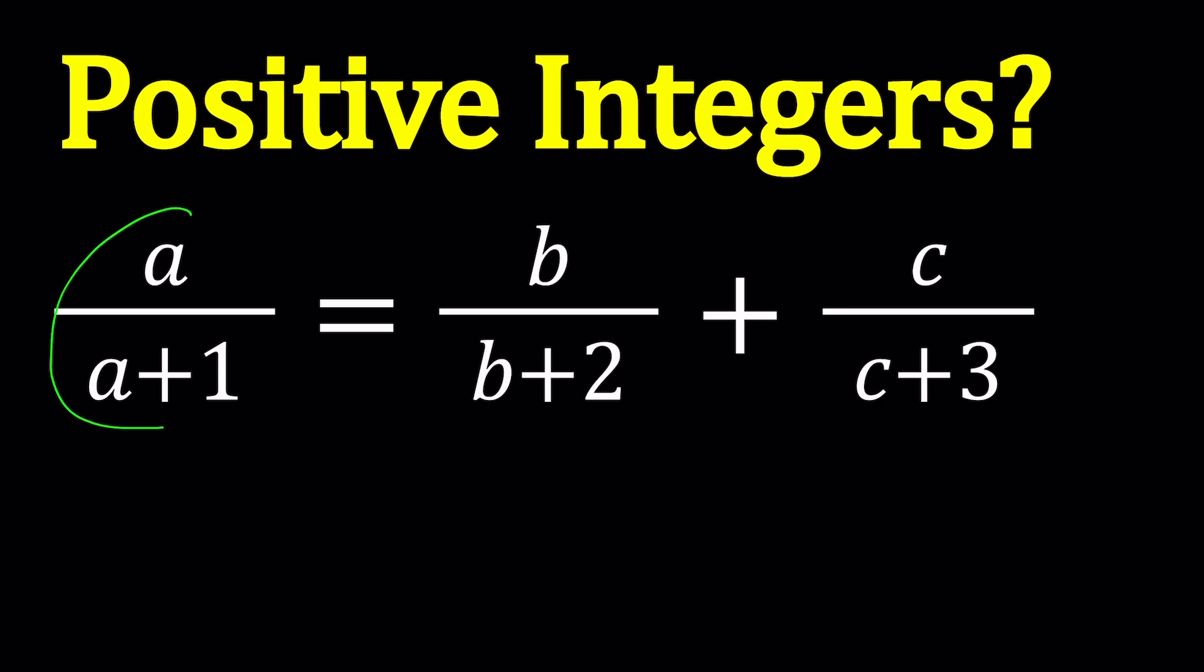First of all, notice that we have something like a over a plus one on the left hand side. Since a is a positive integer, a plus one is greater than a, and a over a plus one is a fraction that is less than one. So does that help at all? Well, it's not only a over a plus one that is less than one, but also the whole right hand side, because they're equal.